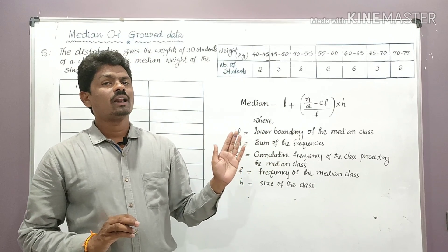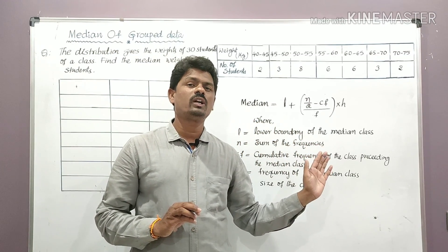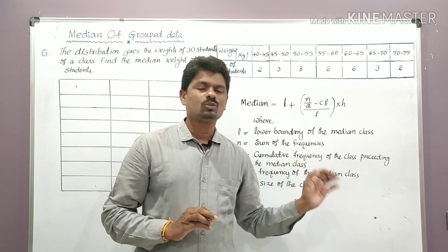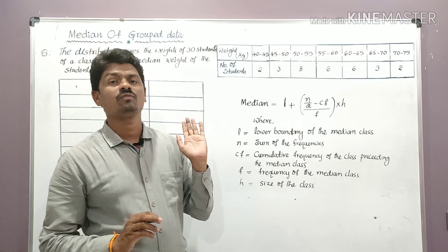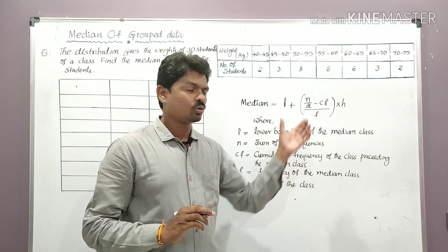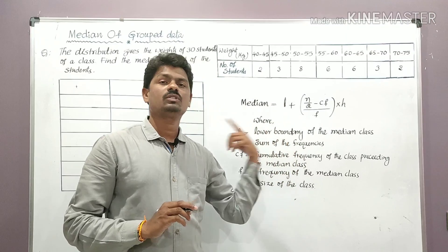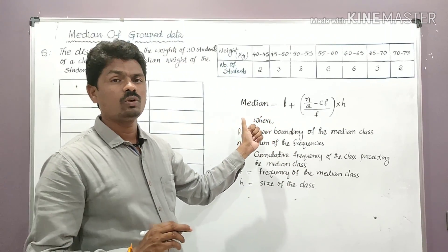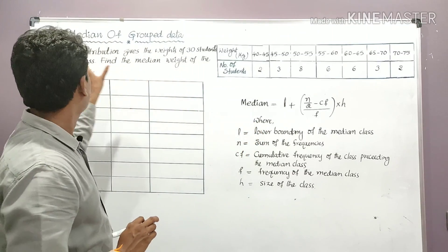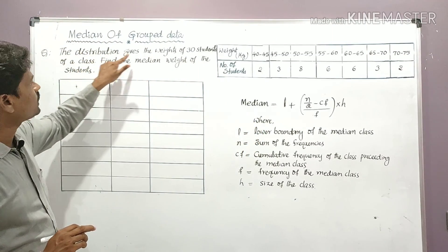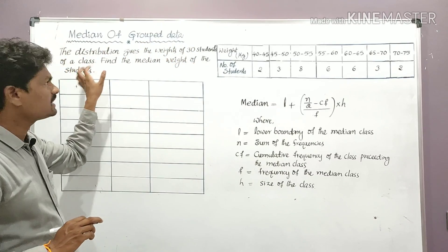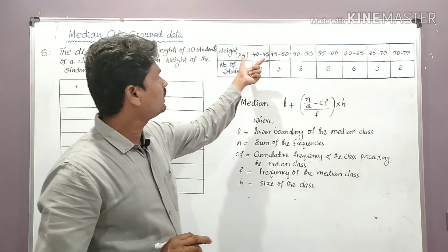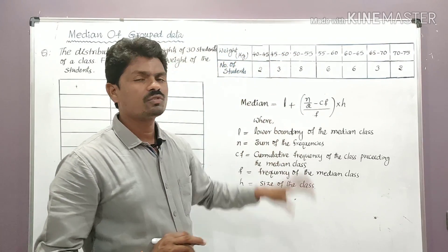You have to remember the formula and the terms involved. If he asks for two marks — write the formula to find the median of grouped data and explain each term. This is very important. Now here is a question: the distribution gives the weights of 30 students of a class — find the median weight.